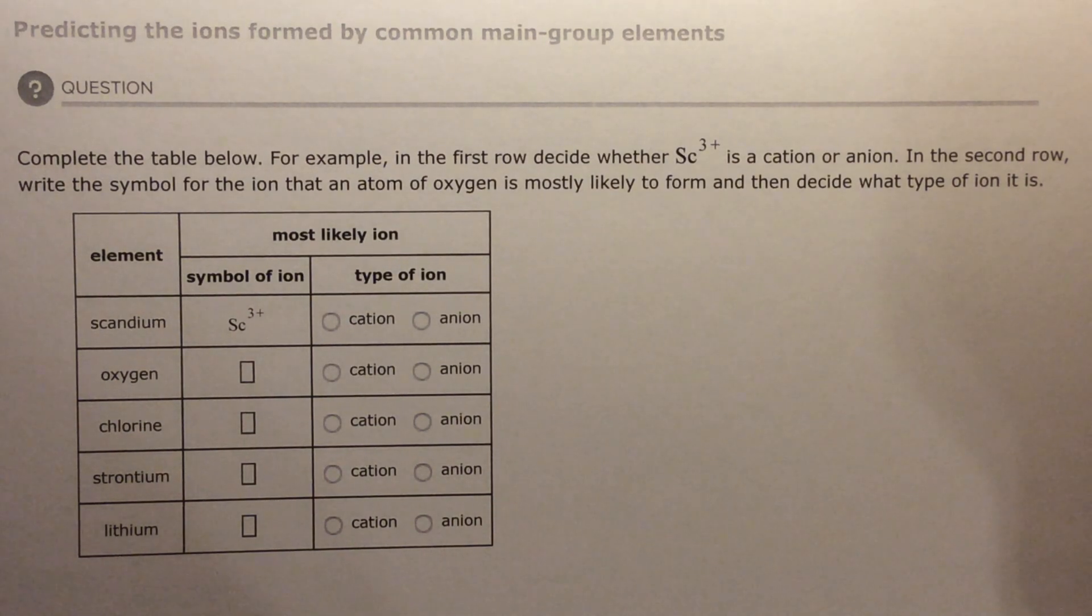Welcome back. This is an Alex homework video on predicting the ions formed by common main group elements. Main group is also called representative elements, and this is groups, the first two columns and the last six columns. So what we would call A's, group 1A, group 2A, group 3A through 8A.